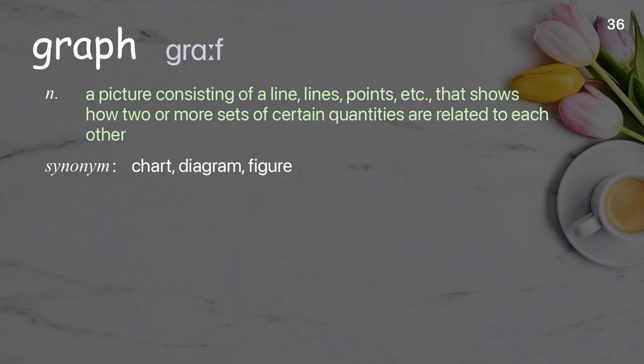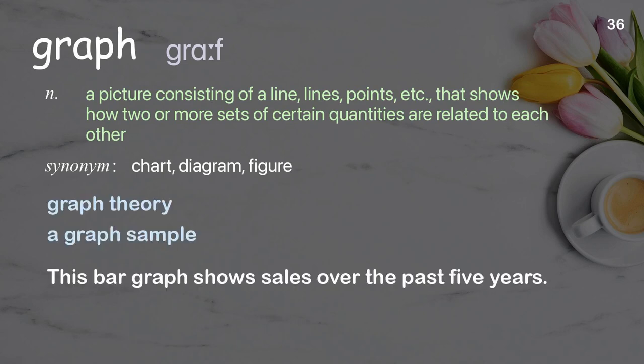Graph. A picture consisting of a line, lines, points, etc., that shows how two or more sets of certain quantities are related to each other. Examples: graph theory, a graph sample. This bar graph shows sales over the past five years.